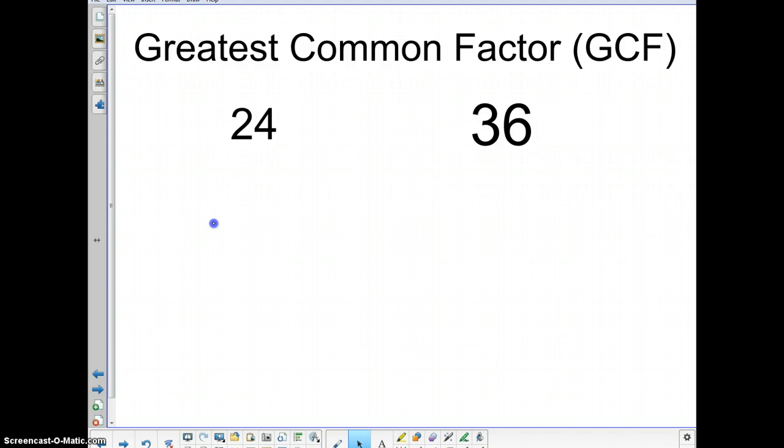Alright. So greatest common factor is our first thing. Okay. So greatest common factor, we have 24 and we have 36. Now to find the greatest common factor between these two, we have to create a factor tree and get the prime factorization between these two.